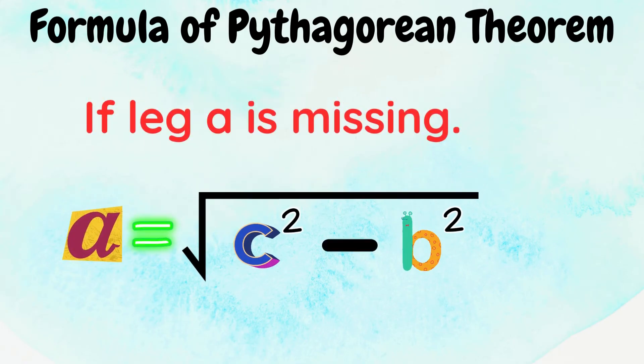Formula if the leg a is missing. We have, a is equal to the square root of c squared minus b squared.